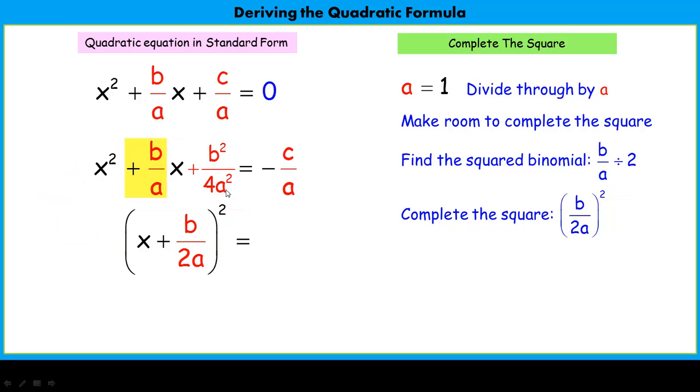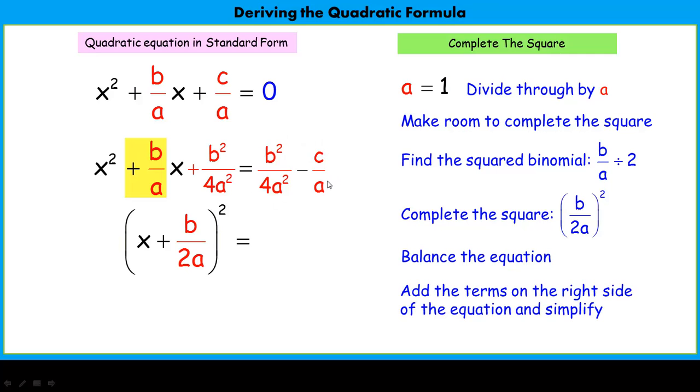If we've added b squared over 4a squared to this side, we need to balance the equation. We also add it to this side. Now we've balanced the equation. We have to clean up the right side by adding the terms and simplifying. To add these, we need a common denominator. I need this denominator to be 4a squared as well, so I multiply by the multiplicative identity of 4a over 4a, which gives me the denominator I want. I multiply c times 4 times a, which I'll rearrange to be 4ac. Now I have a common denominator and can add these fractions. I have completed the square.